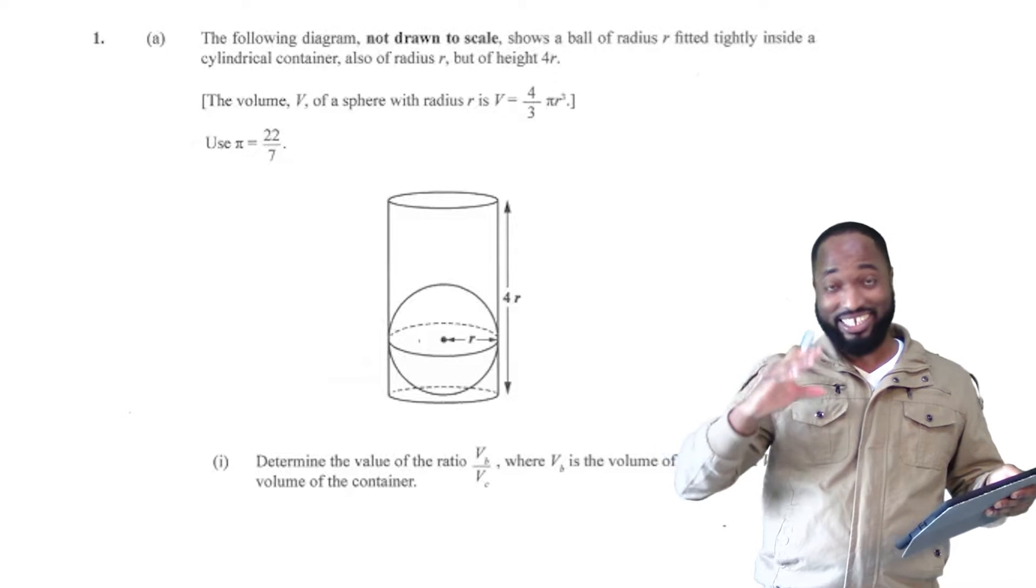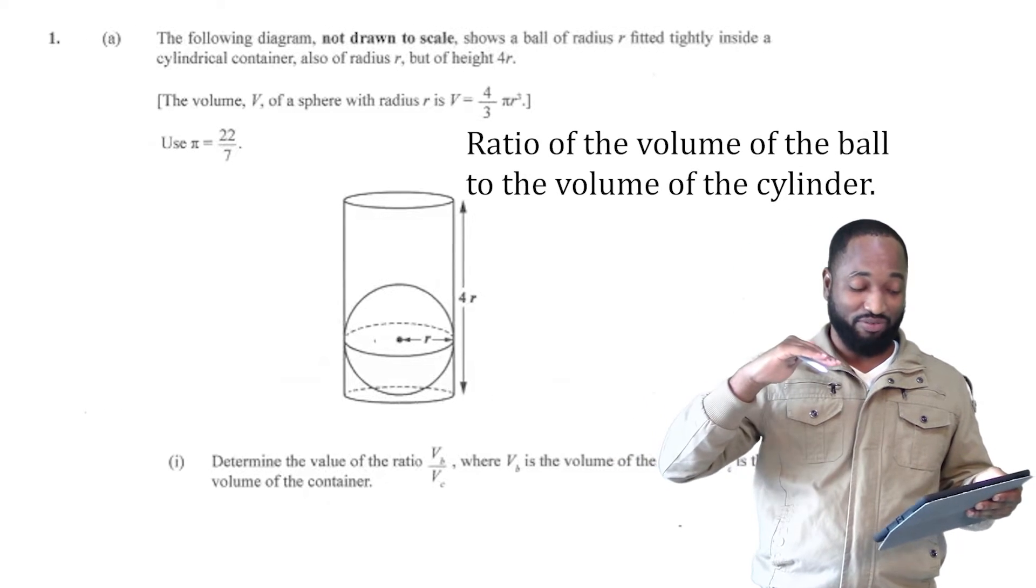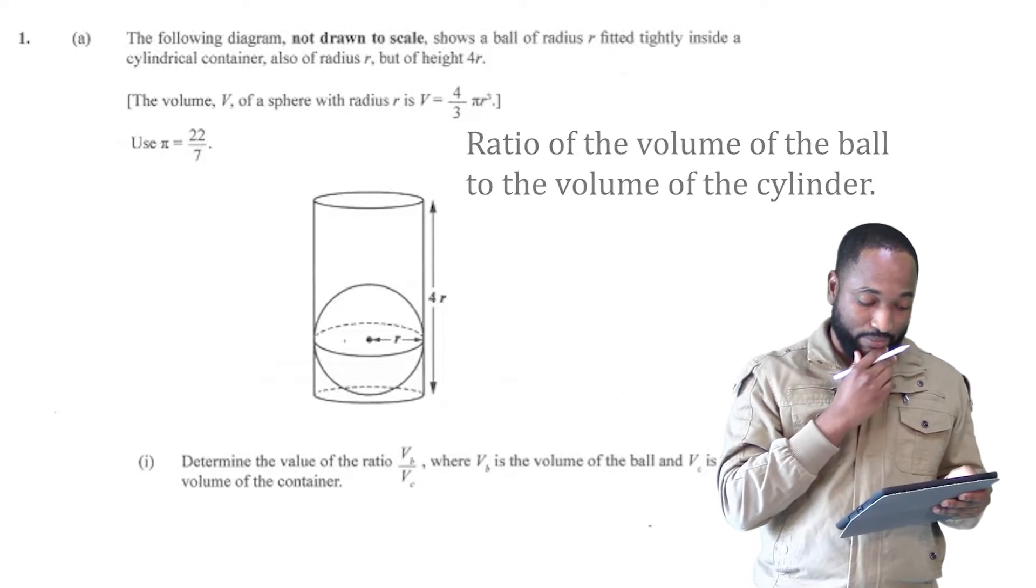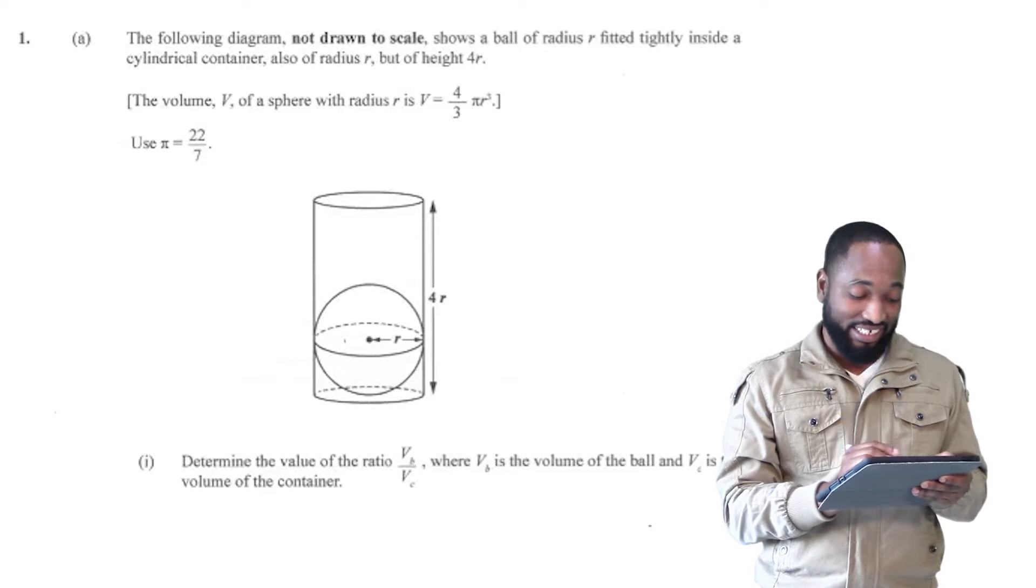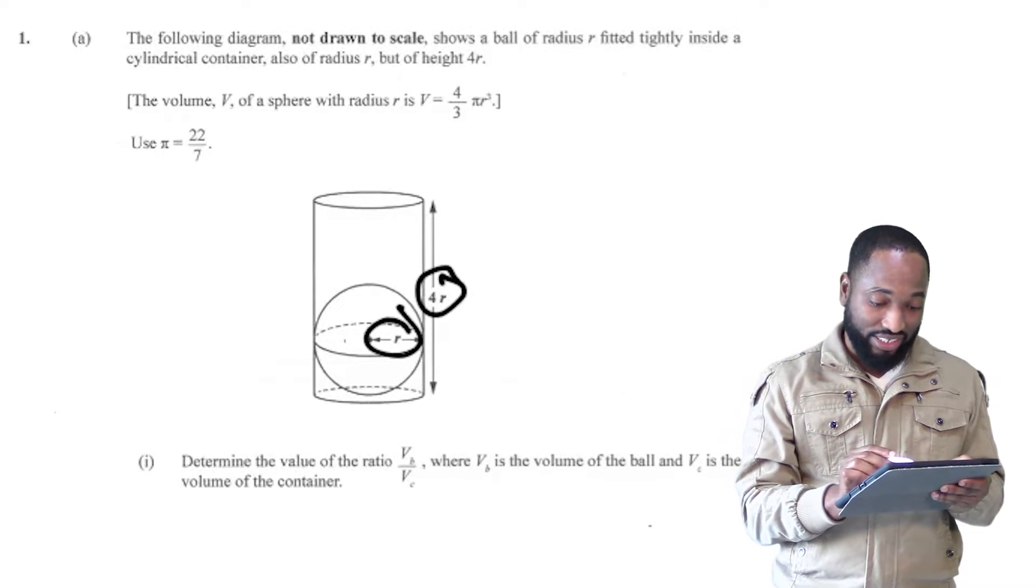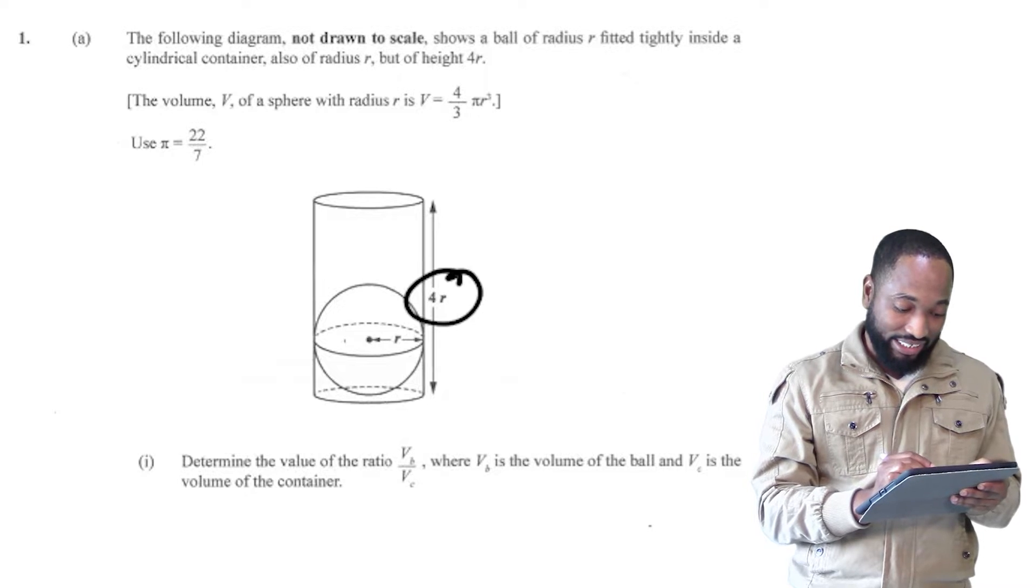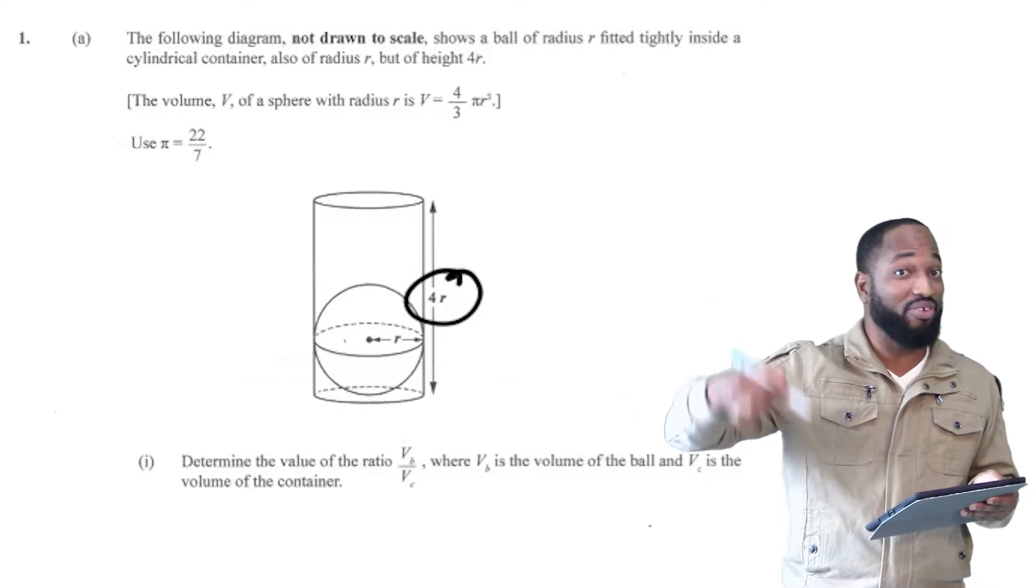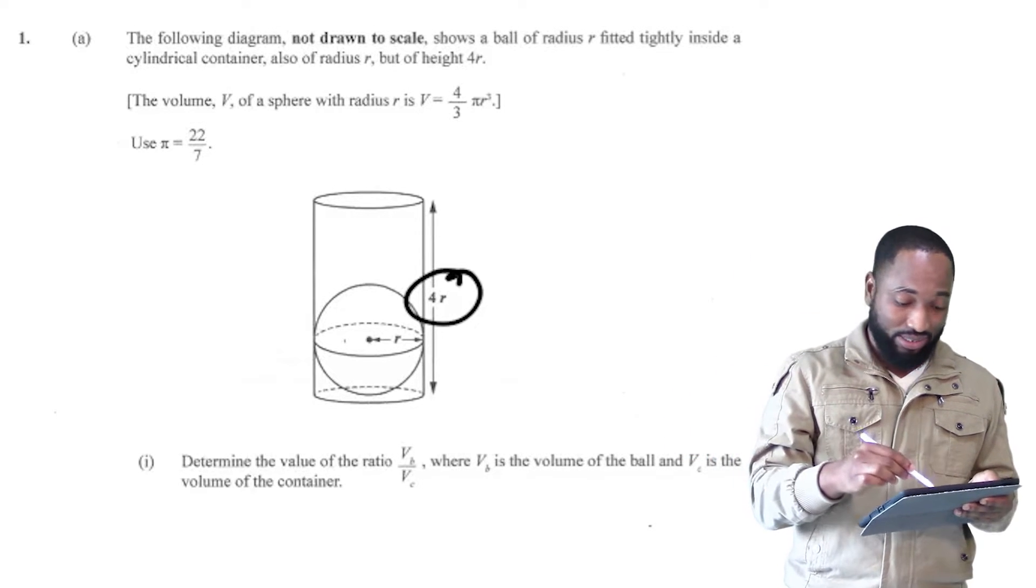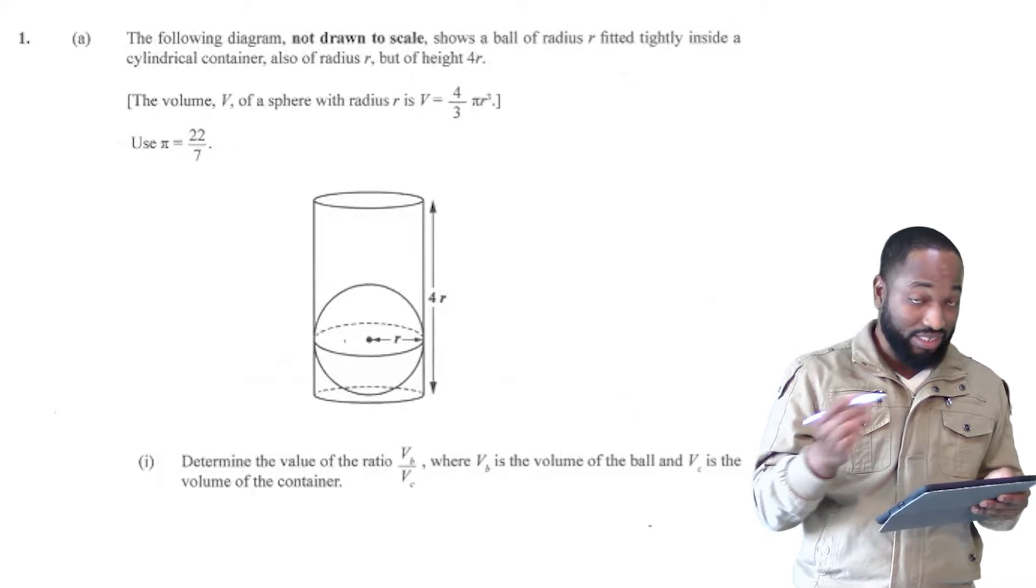There's a ball in a cylinder, ratio of the volume of the ball to the volume of the cylinder. That's what they mean by VB over VC. And here's the thing, they didn't give you the height or the radius in terms of numbers. The height is given in terms of the radius of the sphere. So this sphere is the ball I'm talking about here. So let's see how we do this question.